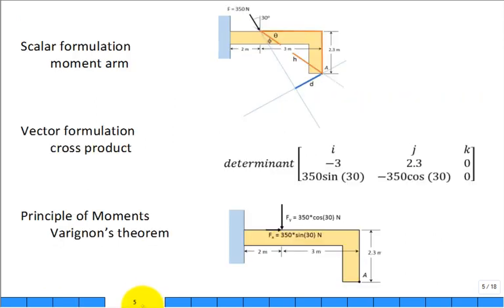Let's summarize. We solved the same problem three ways. We solved the calculate the moment around this point A using a scalar formulation where we just said, this is the line of action of the force F, and from that line of action, get the perpendicular distance, that moment arm distance. It was a little bit of work to calculate the single d, multiply it by the magnitude of the single F, 350 newtons. And we got the same answer in all three cases.